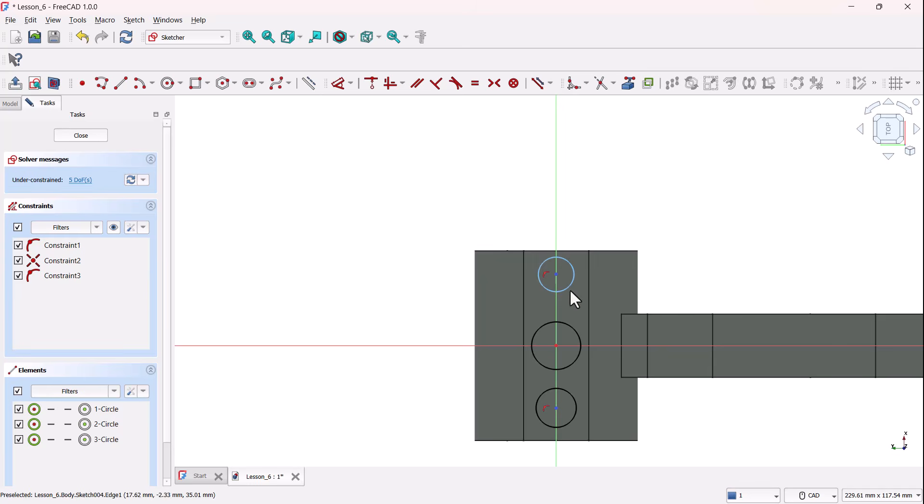Now, select all three circles, hold control, then apply the equal constraint from the toolbar. This ensures they're identical in size.